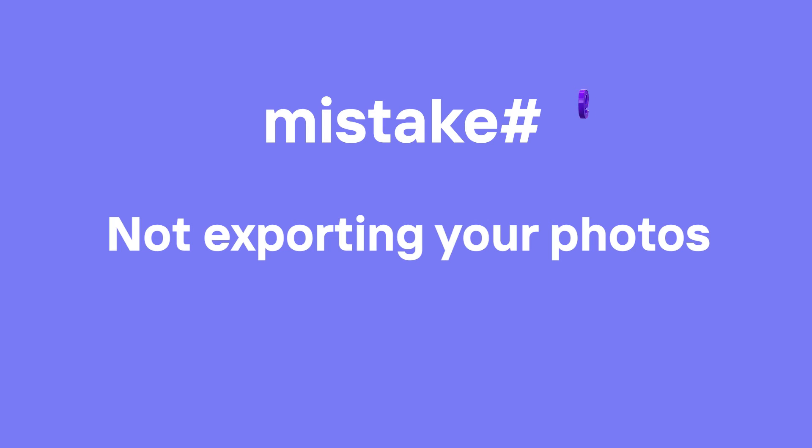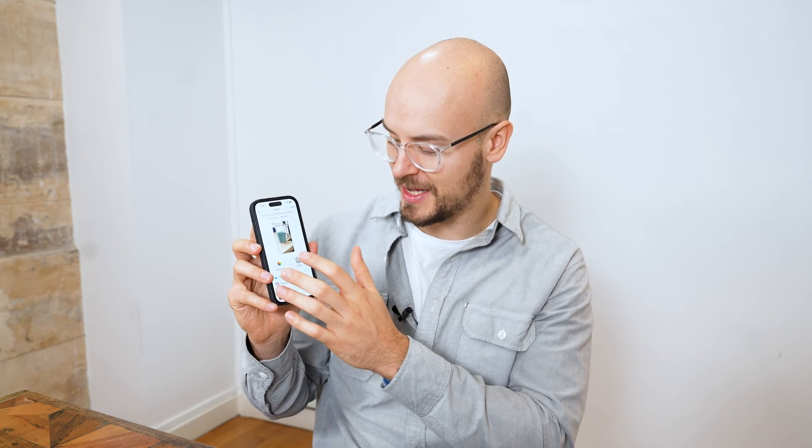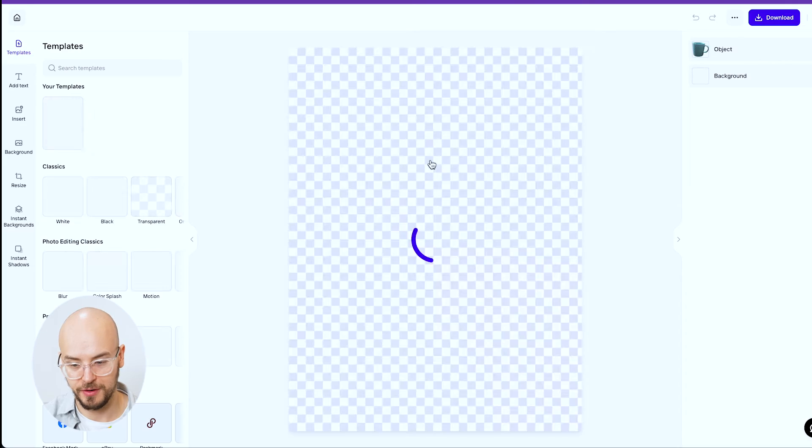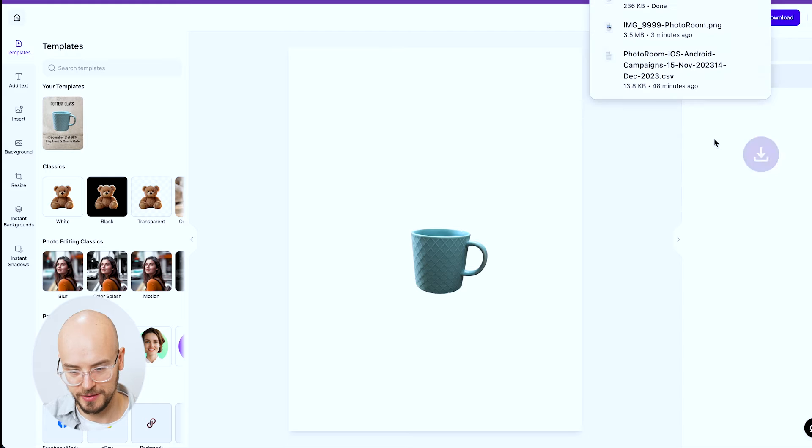Mistake number nine is a very common one: when you create something on your phone, you need to properly export the photo. Once your design is done, you have to click 'save image.' Clicking 'export' alone does not actually export it — it's a bit misleading. Click export and then save image, and now it saves to your designs and your camera roll. On the computer, you just click download and that does it.